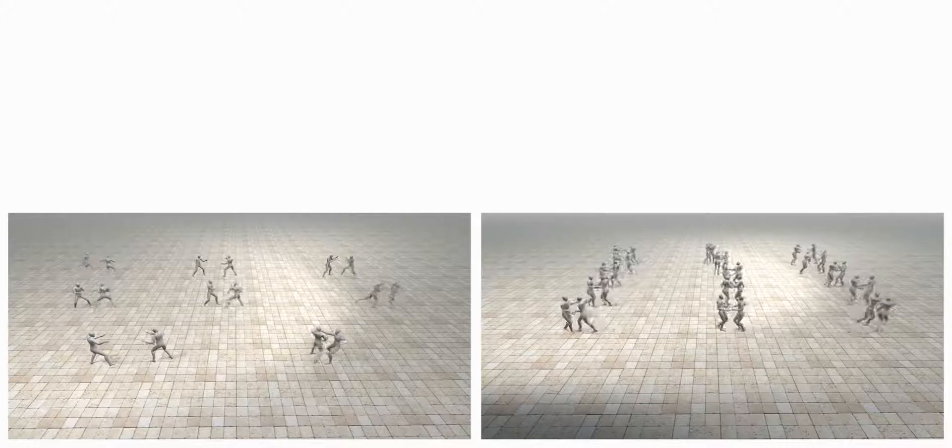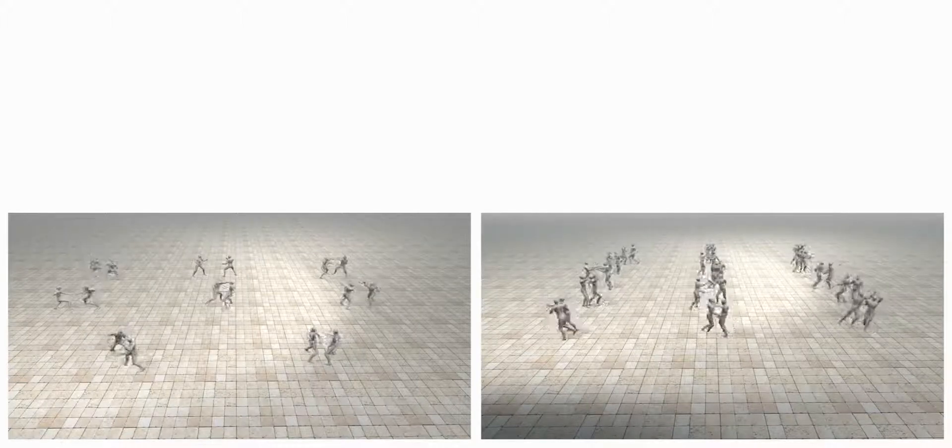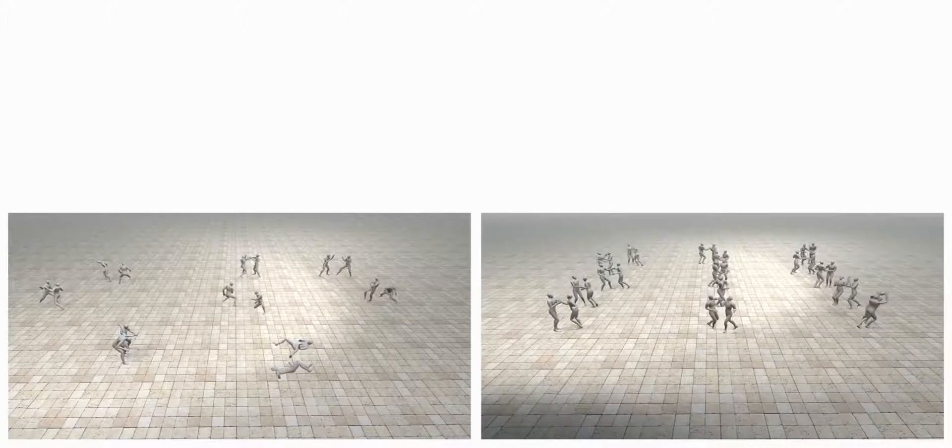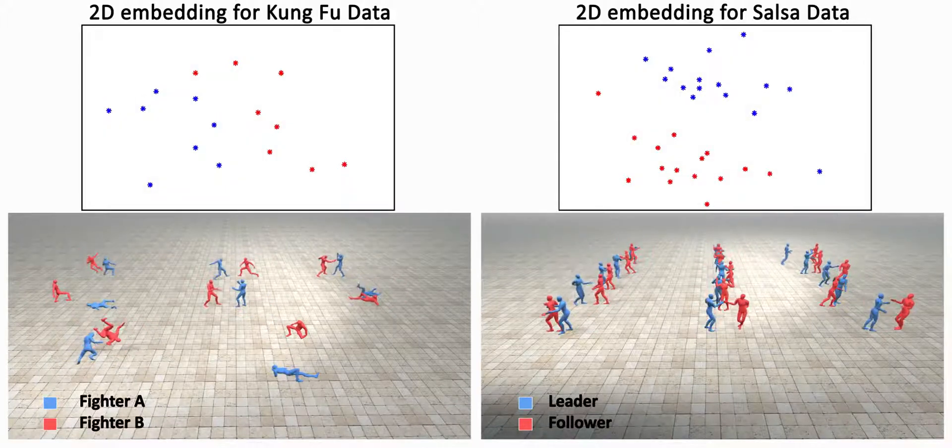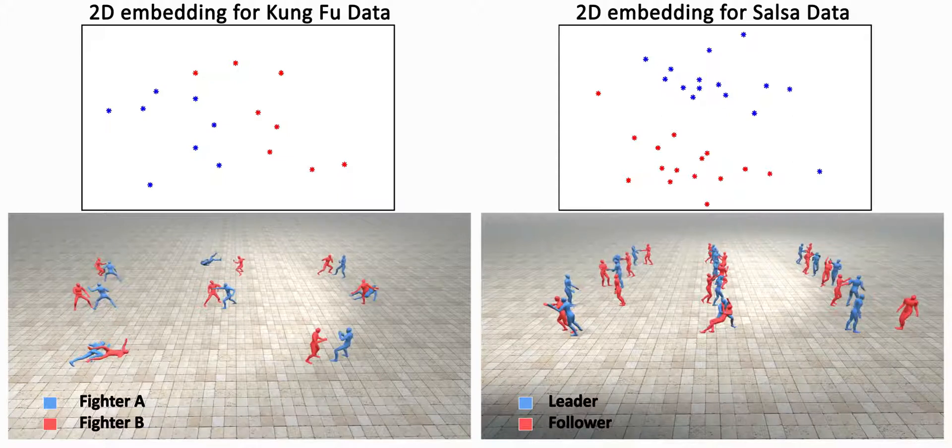Moreover, our method can distinguish fine-grained differences between motions of the same class. In these examples, we can separate the two kung fu fighters and can separate the leader and the follower in the salsa dancing.